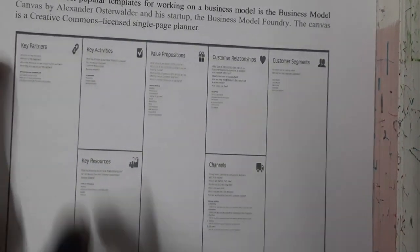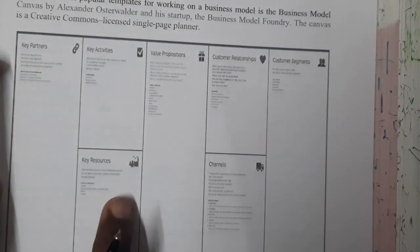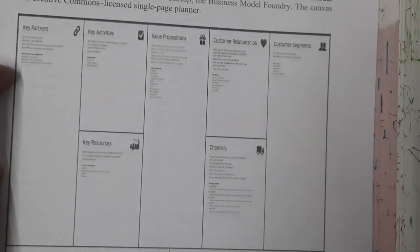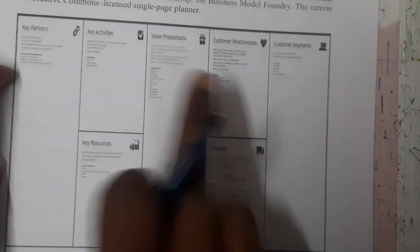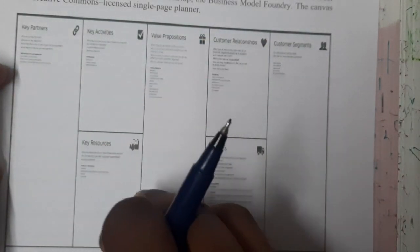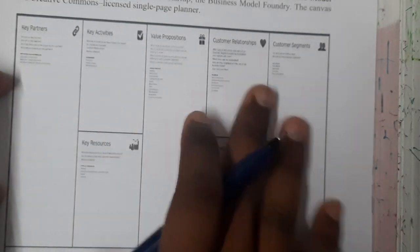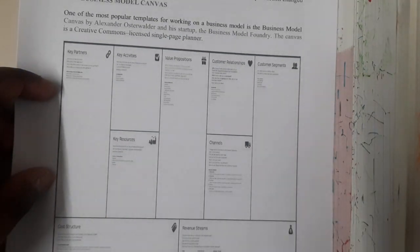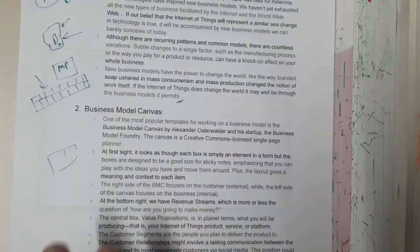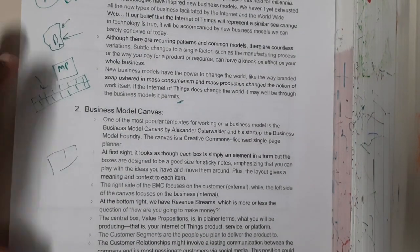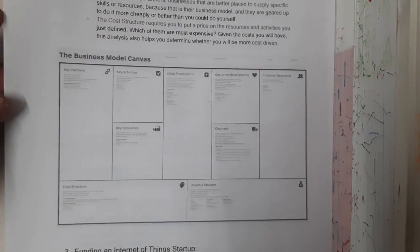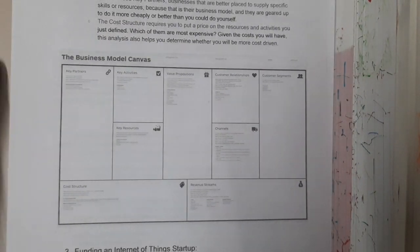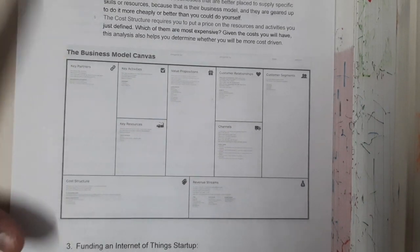In this canvas we have key partners, key activities, key resources, cost structure, revenue streams, channels, and all the details of the business stored here. By using this only you can analyze everything. Almost everything is covered here — that is the business model which we are using. Just go through the diagram and write it down, and go through the theory in the PDF.